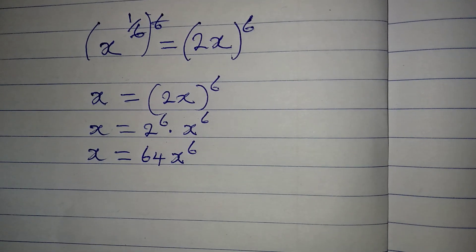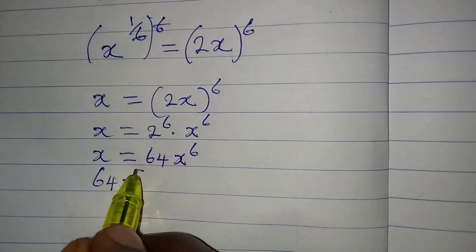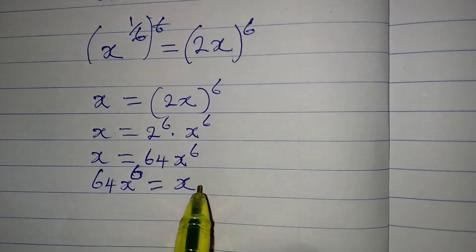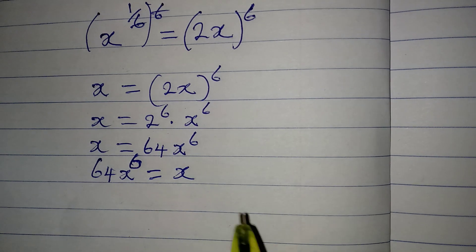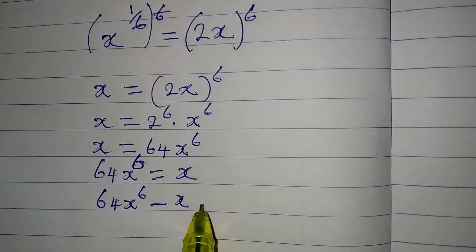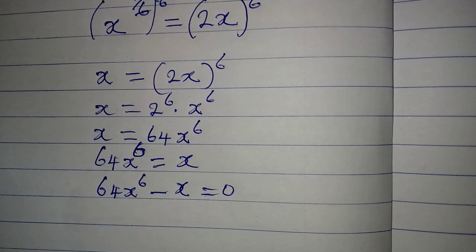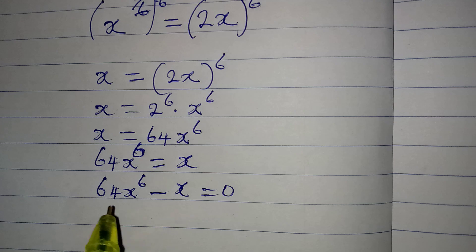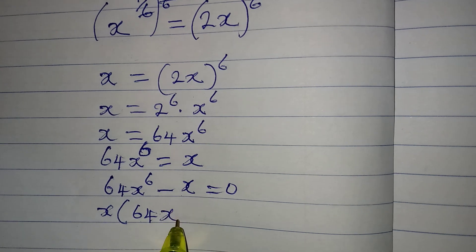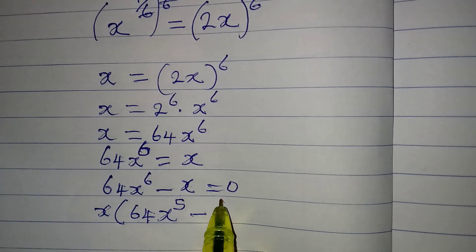Because 2 to the power of 6 is 64, we have 64x to the power of 6 equal to x. Bringing everything to the left: 64x to the power of 6 minus x equals 0. We can factor out x, which is common to both terms, giving x times (64x to the power of 5 minus 1) equals 0.